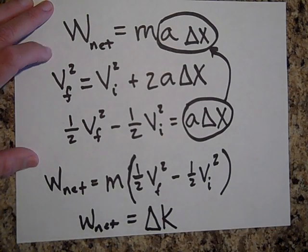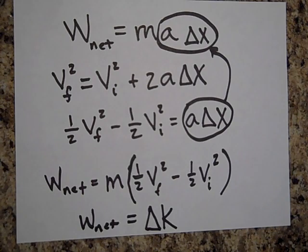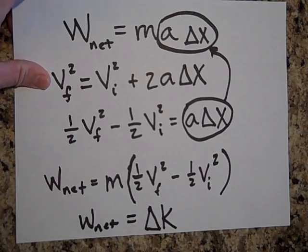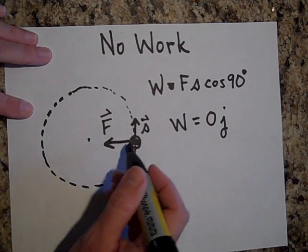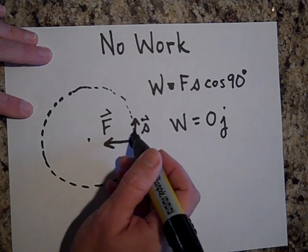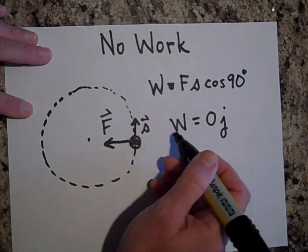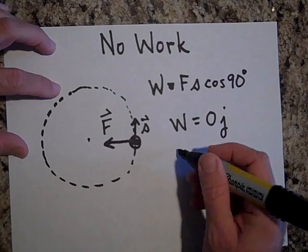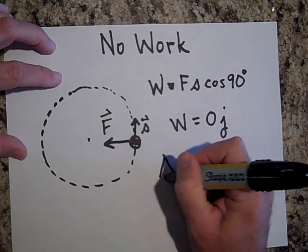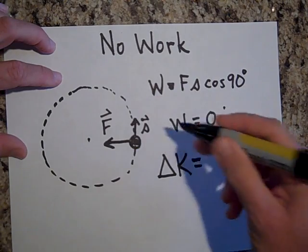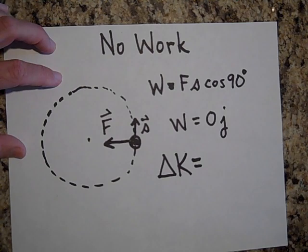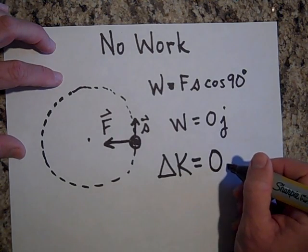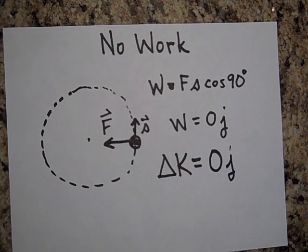That equation is going to be a big deal in this chapter — you'll solve many problems with it. Going back to circular motion: if the net force is directed toward the center, the work done is zero. Notice what that means for kinetic energy: an object in circular motion around a planet has no change in kinetic energy. Kinetic energy is a scalar, so the direction change doesn't matter — the change in kinetic energy is zero joules. See you in the next video.